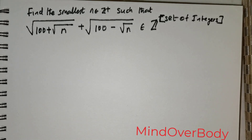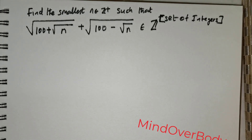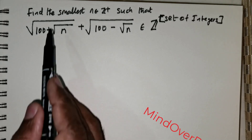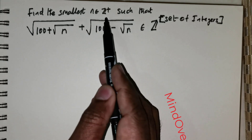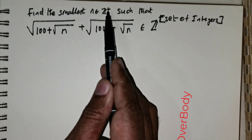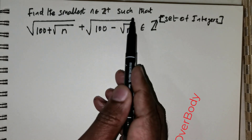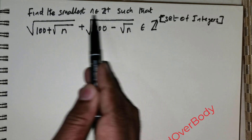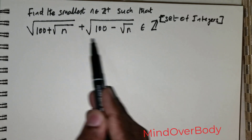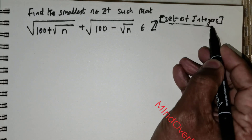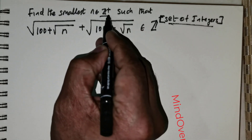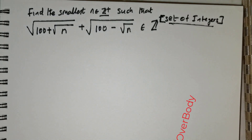Welcome students. We have been given this question — an MIT Olympiad question. We are expected to find the smallest n which is an element of the positive integers, such that this entire quantity is also an element of the integers. In this case, n should be an element of the positive integers.